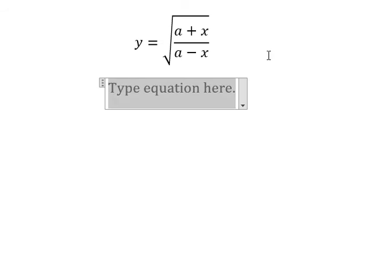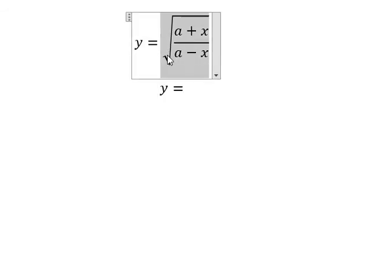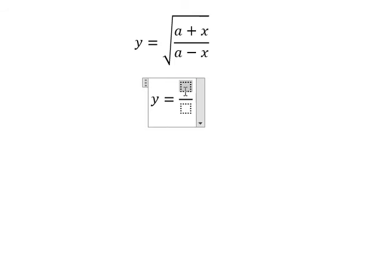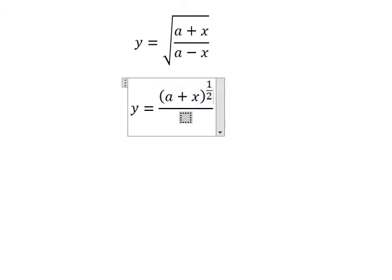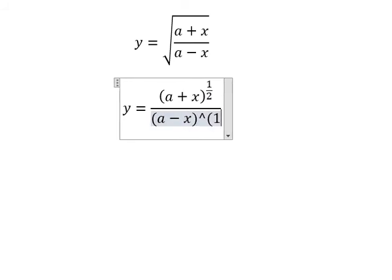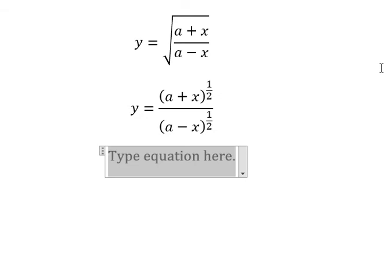Before we do the first derivative of this one, we know that the square root represents 1 over 2. So we can apply the quotient rule of derivative.